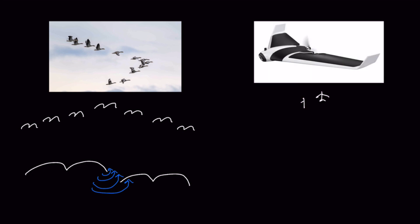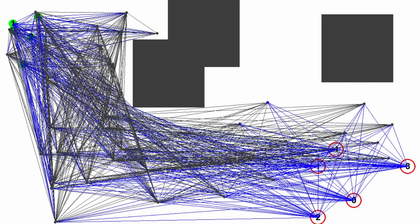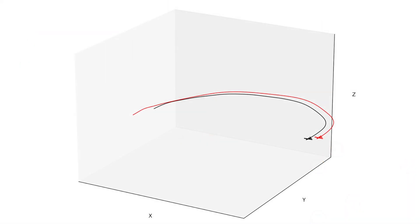Birds fly in formation to save energy by taking advantage of induced lift from one another. So the question is, can we do the same with drones? Studies suggest formation flight can reduce energy use dramatically by even up to 70%. I have already shown path planning for these types of swarms in a previous video. Now we'll take it further by building a physics-based simulation from scratch.